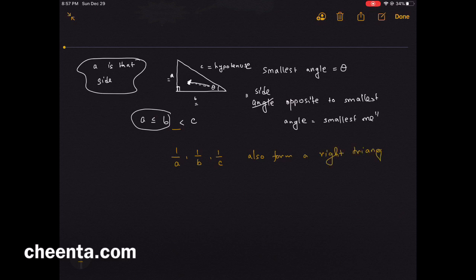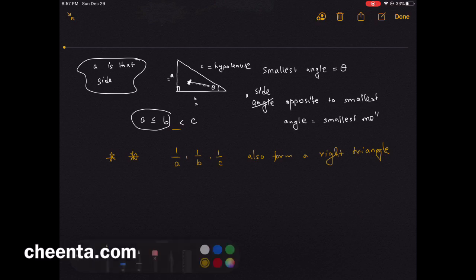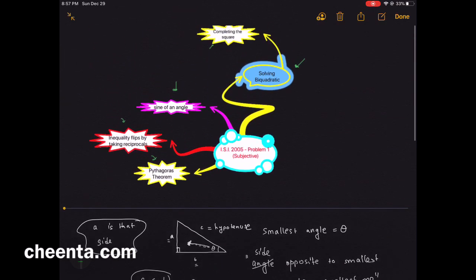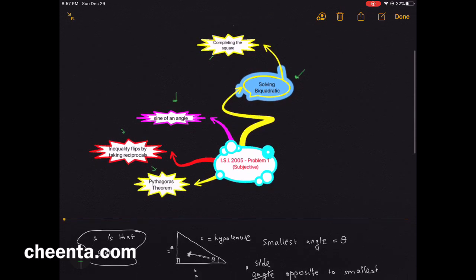This extra information doesn't happen always — it is happening in this particular problem. So 1/a, 1/b, 1/c also form a right triangle. Our goal is to show that sin of theta equals (√5 − 1)/2. Maybe you can pause the video here and try to solve the problem on your own.